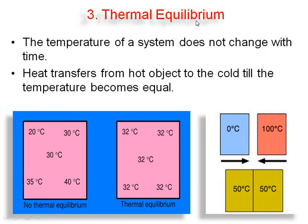The third is thermal equilibrium. The temperature of the system does not change with time — such a system is called in thermal equilibrium. Heat transfer takes place from the hotter body to the colder body until the temperatures become equal. Here, one body is at 0°C and another at 100°C. After some time, the colder body receives energy from the hotter body. This exchange continues until both bodies acquire the same temperature — then the systems are in thermal equilibrium. In the first diagram, different temperatures exist at different points, but in the second diagram, the temperature is uniform inside the system, indicating thermal equilibrium.